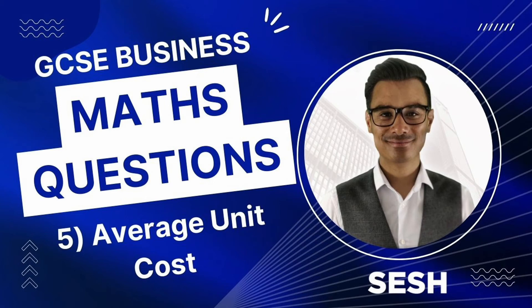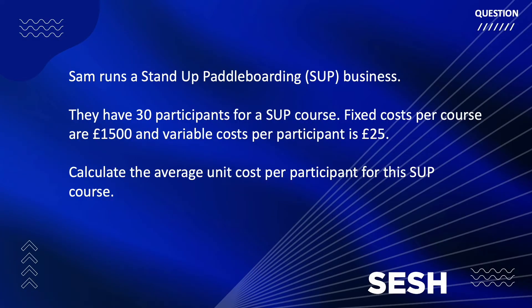Let's have a session on GCSE Business Maths questions, and this is on average unit cost. Sam runs a stand-up paddleboarding SUP business. They have 30 participants for a SUP course. Fixed costs per course are £1,500 and variable costs per participant are £25. Calculate the average unit cost per participant for this SUP course.